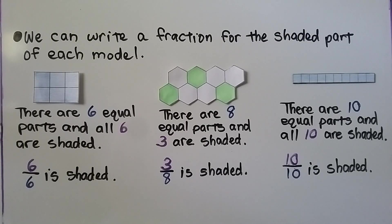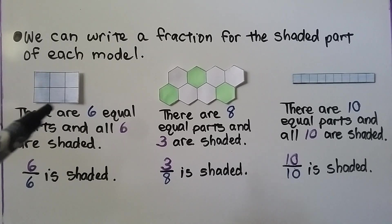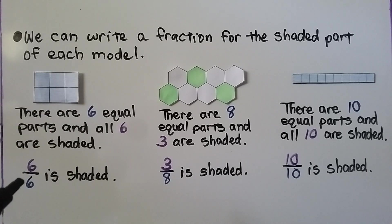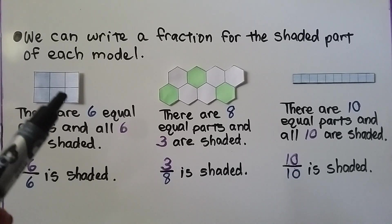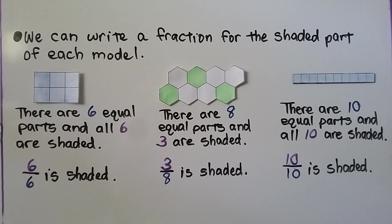We can write a fraction for the shaded part of each model. Here we have a rectangle in six equal parts, and all six are shaded. Six of the six parts are shaded — six-sixths is shaded. That means the whole thing is shaded. The same numerator and denominator means it's equal to one. So the one whole thing is shaded.